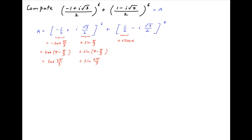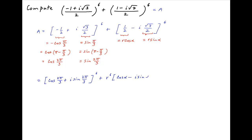In the second term, let half be equal to r cos alpha, and let root 7 upon 2 be equal to r sin alpha. Therefore, a can be written as cos of 2pi upon 3 plus i times sin of 2pi upon 3, whole raised to the power 6, plus r raised to the power 6 multiplied by cos alpha minus i sin alpha, whole raised to the power 6.